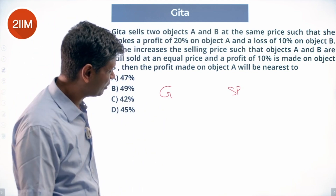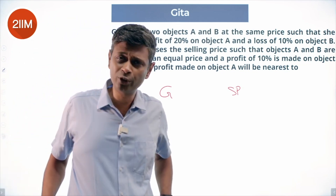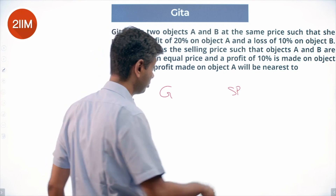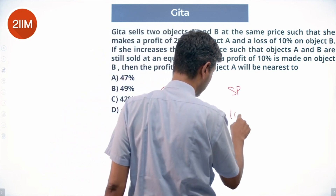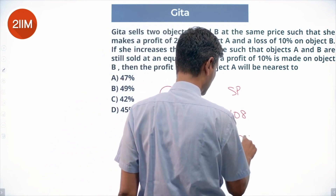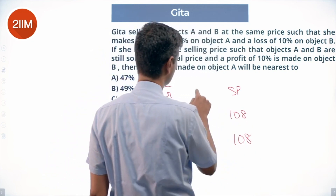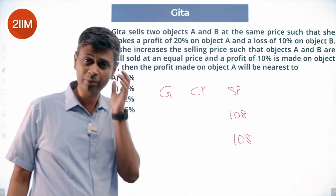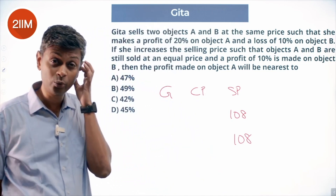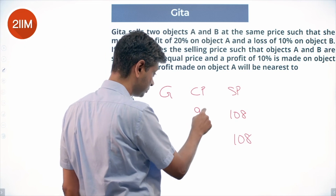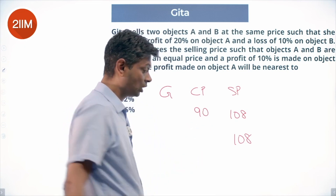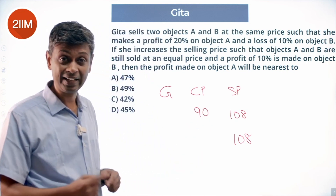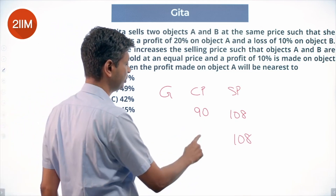I want the selling price to be a multiple of both 1.2 and 0.9, so I'm going to take the selling price as 108 — a very important skill set, super useful. At a selling price of 108, that is 1.2X, so X is 90. At 108 selling price with 0.9X, that gives 108 divided by 0.9, which is 120.